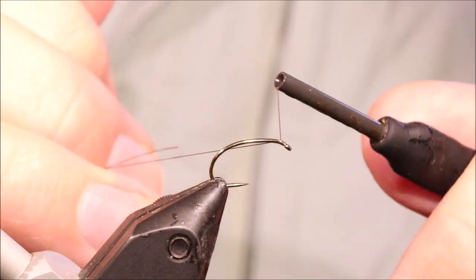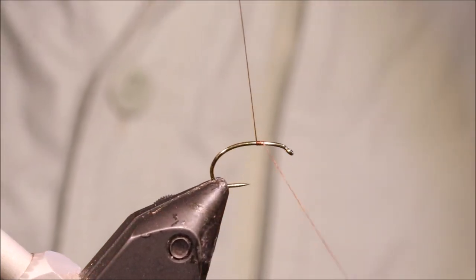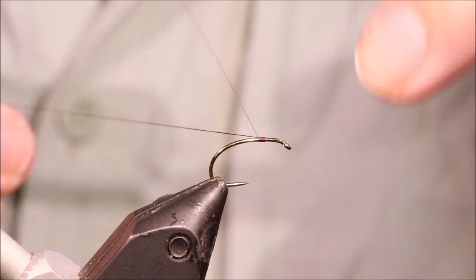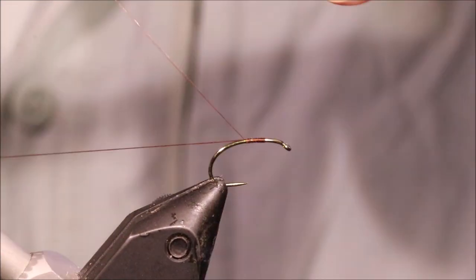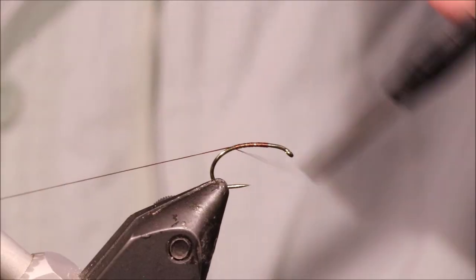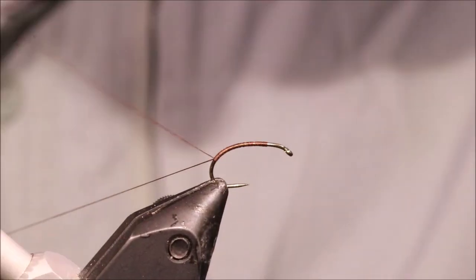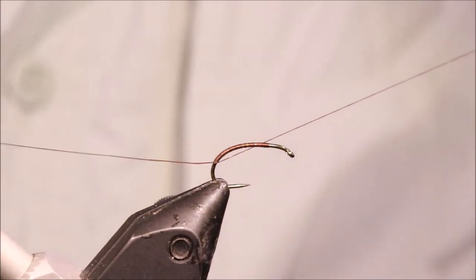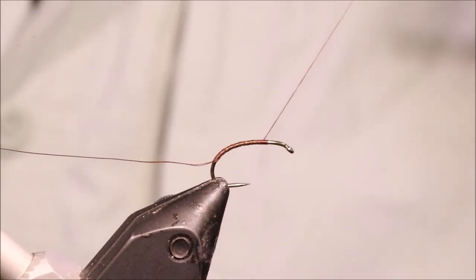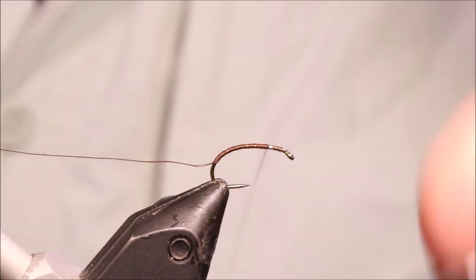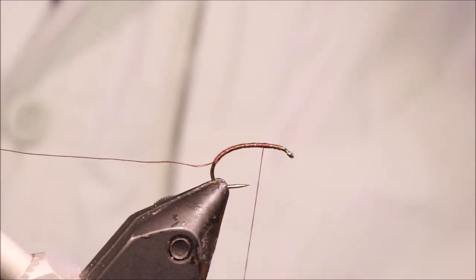I'm going to start my thread. For this color I'm using dark brown uni 8-aught, and I'm going to run along around the bend, leave my tag end, and come back up in open spirals. Make sure everything's coated. I'm going to stop with my threads just in front of the hook point, slightly forward.